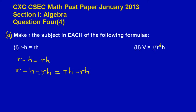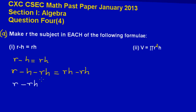Now if you notice, I have R minus H minus RH. What I really want to do is group all my R's together so I can factor out R. So I am going to group R with my negative RH, and then I have this minus H. That is equal to zero, because positive RH cancels out with negative RH, leaving us with zero.